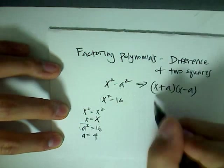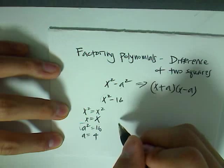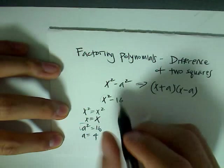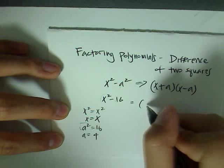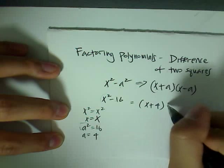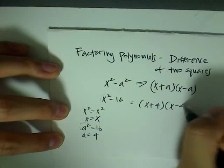So now that we have x and a, we can finish the factoring process of this equation. So we have, when you plug it in, x plus 4 times x minus 4.